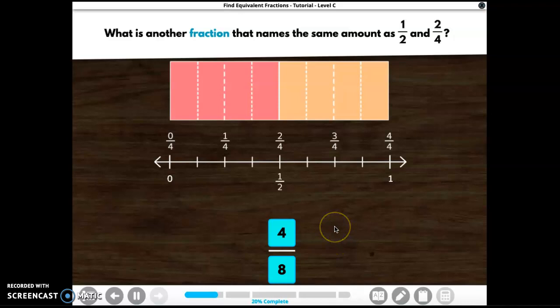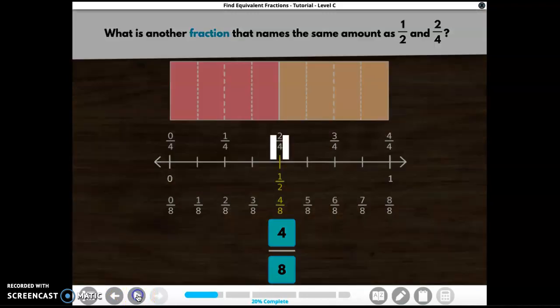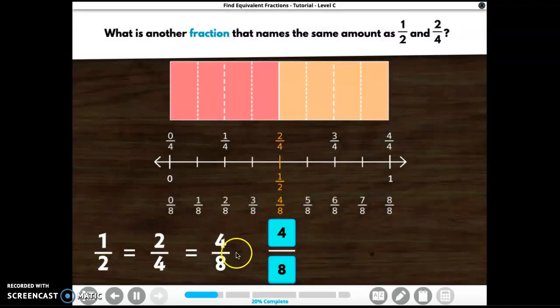Here are all the eighths. This number line shows how one half and four eighths name the same number, so they are equivalent fractions. Folding our picture and using the number line showed us something pretty cool. Equivalent fractions always end up on the same spot in a number line. Four eighths is right above one half and right above two fourths, that means they are equal. One half, two fourths, and four eighths are all equivalent fractions.